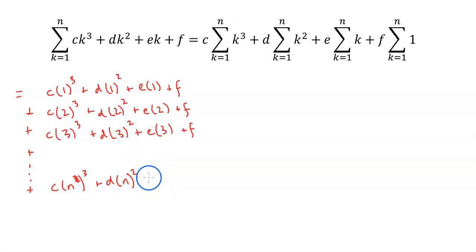I guess I should put the 3 on the outside. Doesn't really matter, but got to keep everything consistent. So e times n plus f. And then we add all of these things together.